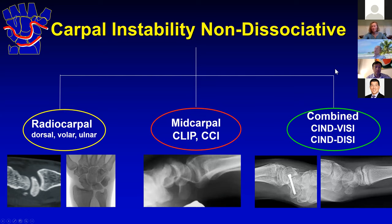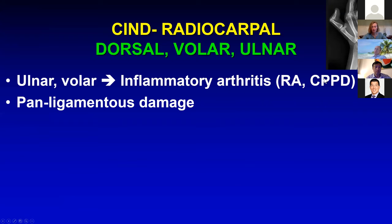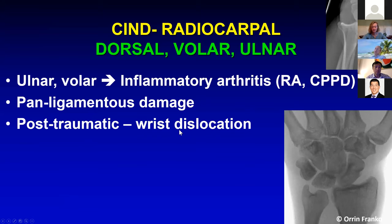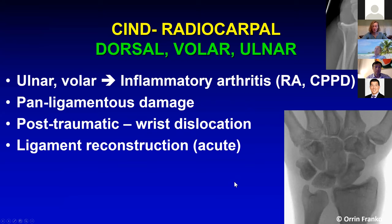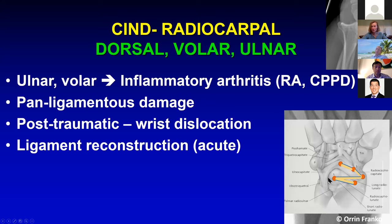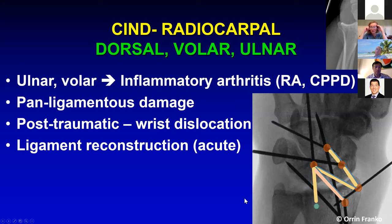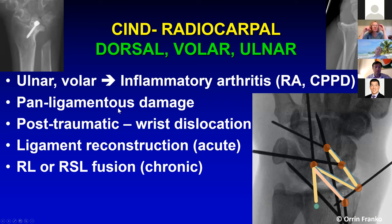Radiocarpal CIND variants include dorsal subluxation of the carpus, volar subluxation, or ulnar-translatory deformities. Ulnar translatory and volar deformities are generally due to inflammatory arthritis — rheumatoid arthritis or sometimes CPPD — with pan-ligamentous damage around the proximal carpal row. Post-traumatic radiocarpal CIND is the second biggest type, generally from wrist dislocations — the entire carpus is translated ulnarly with no break in the proximal carpal row. This can be acutely treated with acute ligament reconstruction, including the radioscaphocapitate and long radiolunate ligaments. In a chronic situation, there is little else to do except fuse part or all of the proximal row to the radius.